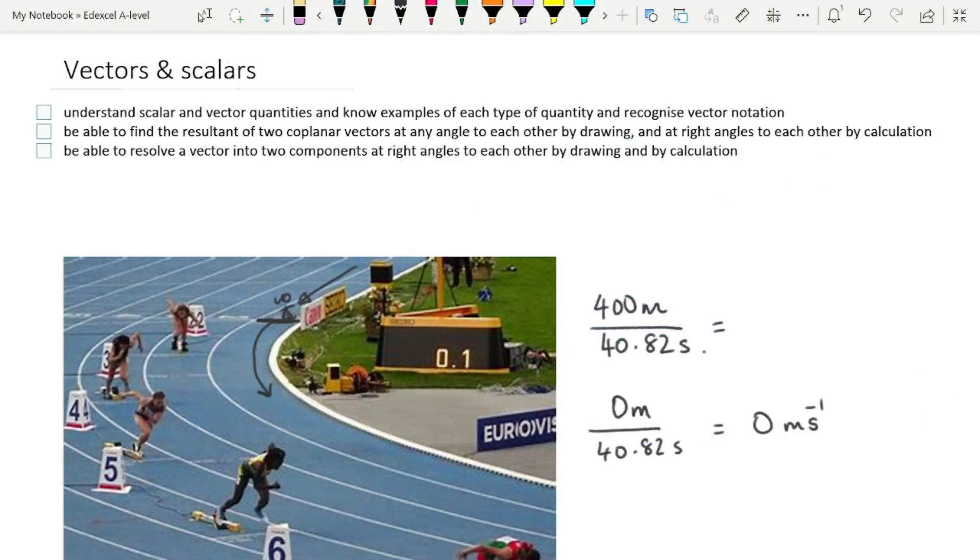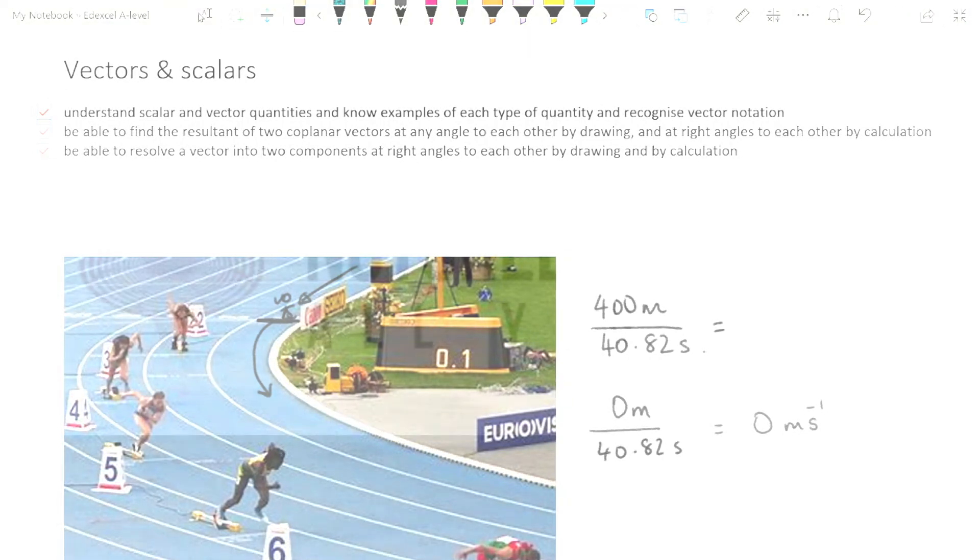Let's check back in with our specification points. See what we need to know and whether we do in fact know them. So understanding scalar and vector quantities and know examples of each type of quantity. Check. To find the resultant of vectors at any angle to each other by drawing, and then at right angles to each other by calculation. We've done that. And to be able to resolve a vector into its components at right angles to each other. So it's horizontal and vertical components, both by drawing, dropping to the axes, and by calculation, using sine and cos. So that's our first three specification points covered for A-level.